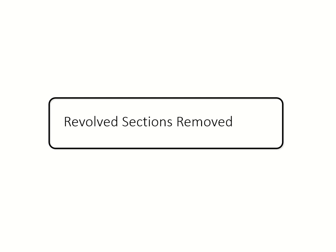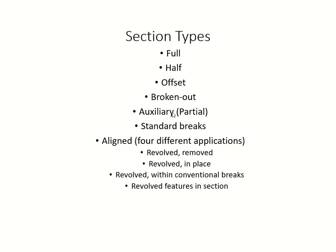In this section we're going to get into aligned sections, the very first one being revolve removed. Aligned sections have four different types. We can review: we started with full, half, offset, auxiliary and partial, then standard breaks, and now aligned sections. The four applications are: revolve removed, revolve in place, revolve with conventional breaks, and revolve features in section.